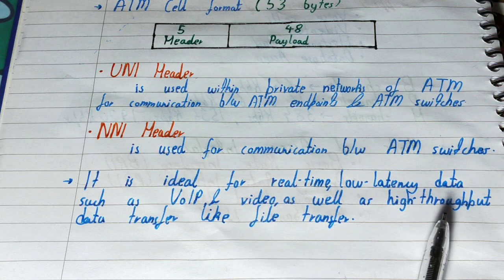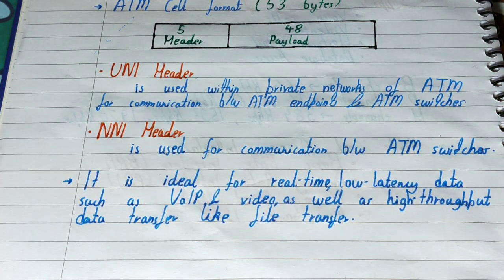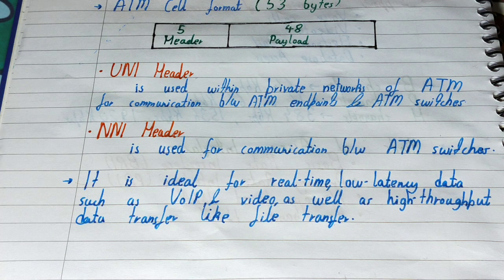ATM is ideal for real-time, low-latency data such as voice and video, as well as high-throughput data transfer like file transfers. Because packets are equally sized, it's easy to calculate how much data can be transferred through the network traffic. Priorities can be selected for low-latency data, and there are no queuing delays. This is why ATM is replacing Frame Relay, which is unreliable and divides data into variable-size packets sent over random routes. ATM selects a particular route before transmission, making it more reliable.